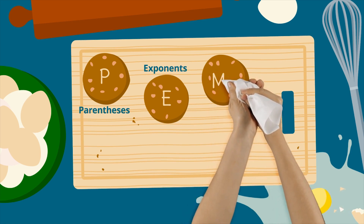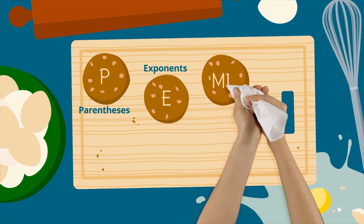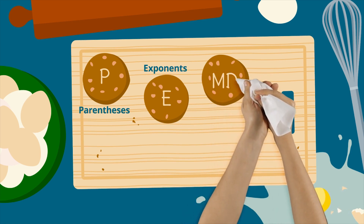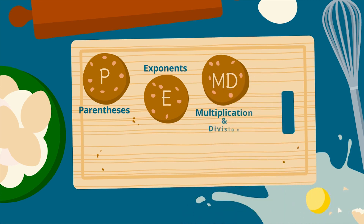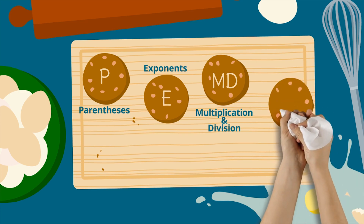The next step is M and D, which stands for multiplication and division. After parentheses and exponents have been evaluated, you should multiply and divide, always from left to right.